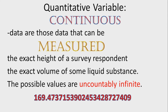The next type of quantitative variable is continuous. Continuous data are those that can be measured — for example, the exact height of a survey respondent or the exact volume of a liquid substance. The possible values are uncountably infinite. For instance, a height may appear to be 150 centimeters, but if you zoom in, you get values like 169.4737... with infinitely more decimal places — so that data is measured, or continuous.